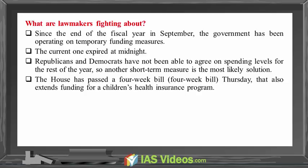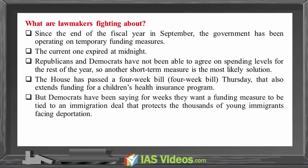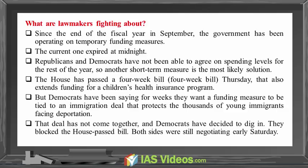Thursday's bill also extends funding for a children's health insurance program. But Democrats have been saying for weeks they want a funding measure to be tied to an immigration deal that protects thousands of young immigrants facing deportation. That deal has not come together and Democrats have decided to dig in — they blocked the House-passed bill.